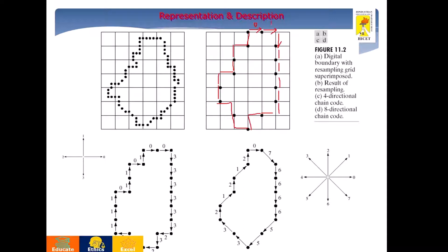The resulting chain code is: 0, 0, 3, 3, 3, 3, 3, 3, 2, 2, 3, 2, 1, 1, 2, 1, 1, and likewise. The chain code is represented by means of straight line segments, and depending upon the direction of each straight line segment, numbering is provided. If you use 8-directional chain code, diagonal representation is permitted and the corresponding code is provided. Based upon it, the chain code is represented.